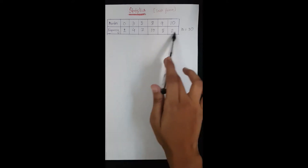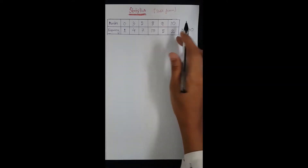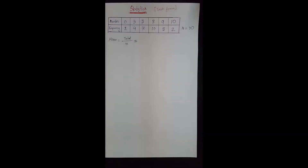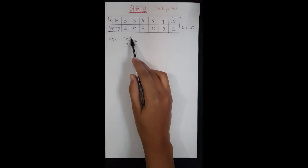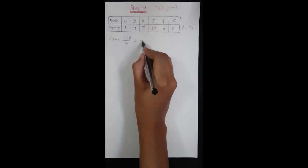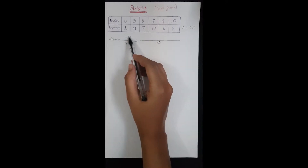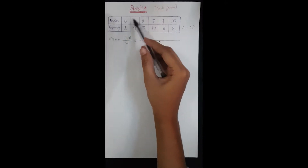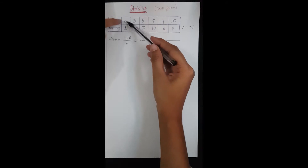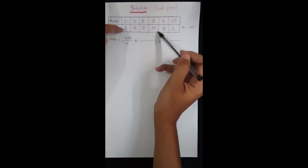By adding the numbers in the second row we find the total number of students, so N equals 30 in this case. To calculate the mean of this data we need to find the total marks and the number of students. N equals 30, and to calculate the total marks obtained we need to multiply the numbers in both rows.